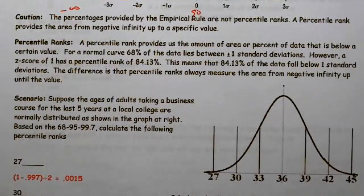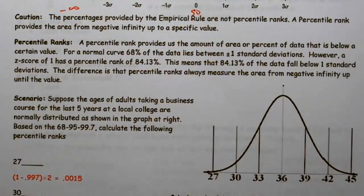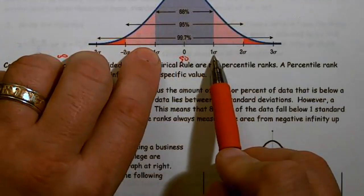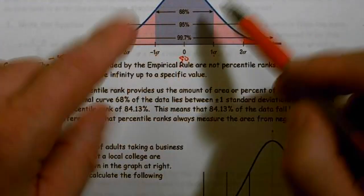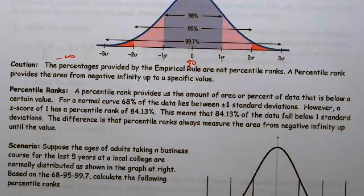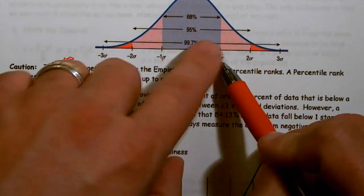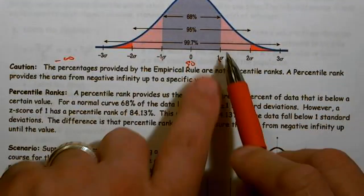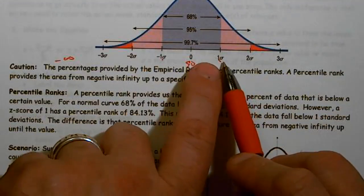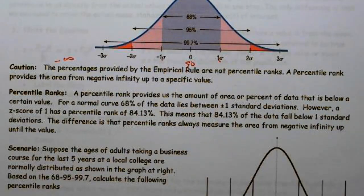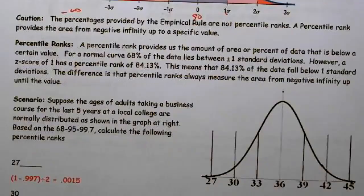A percentile rank gives the percent of data below a certain value. For example, 50% is below the mean. The empirical rule is an estimate — not exact. The exact calculation shows that about 84.13% of the data is below one standard deviation above the mean.